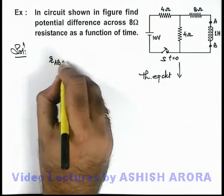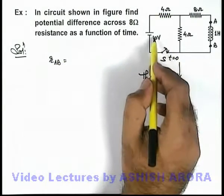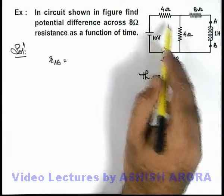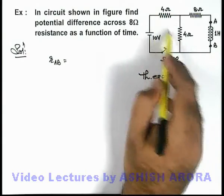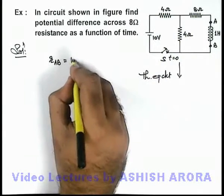R internal across terminals A and B is here, battery can be considered as ideal so this 4 ohm is in parallel with 4 ohm so that'll be 2 plus 8, that can be taken as 10 ohm.